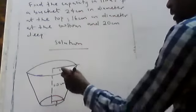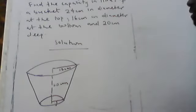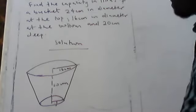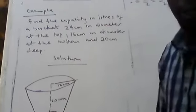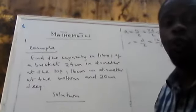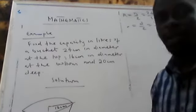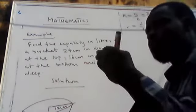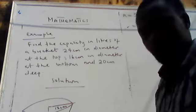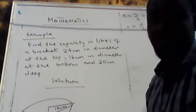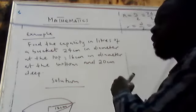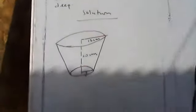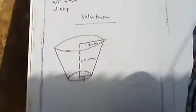Now I have to find the volume of the solid shape. Before finding the capacity in liters, you must first find the volume of the solid shape — the amount of space the solid shape can occupy. After finding the volume, we will convert it to liters. To find the volume of this shape, you have to extend it to make a complete cone.